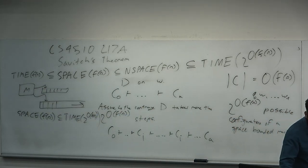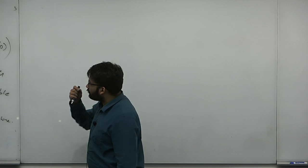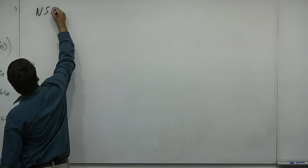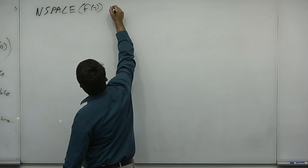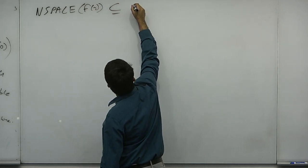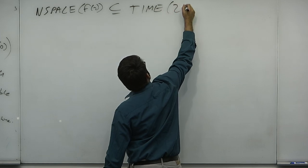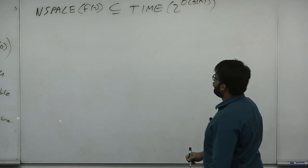A deterministic Turing machine has a space bound; if it has a space bound, it has a time bound. Actually, a non-deterministic Turing machine also has a space bound. If a non-deterministic Turing machine has a space bound of f(n), then I claim it also has a time bound of 2^(O(f(n))).